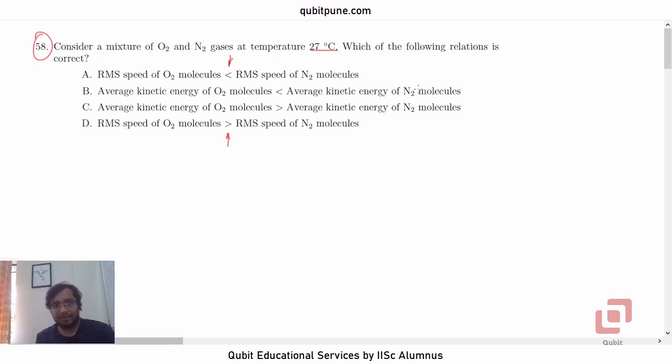The problem is very simple. First of all, we take a note of the fact that both gases are diatomic and both are at the same temperature. And that is 27 degrees Celsius or 300 Kelvin.